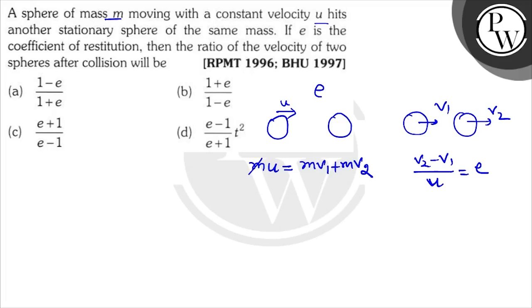So v2 minus v1, and that is equal to 1 by e.